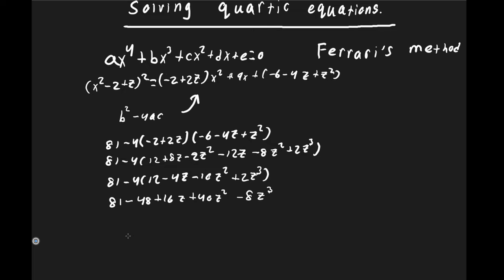Rearranging gives the cubic resolvent: −8z³ + 40z² + 16z + 33 = 0. We need to find a value of z that satisfies this cubic, which we will then plug back into the equation to obtain perfect squares on both sides.